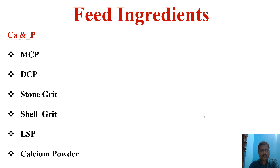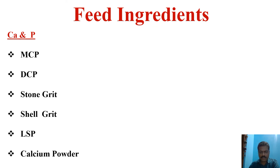Now we come to the calcium and phosphorus sources. What are the calcium phosphorus sources added in the feed formulation? There should be MCP (monocalcium phosphate) and DCP (dicalcium phosphate), which contribute both calcium and phosphorus availability to the feed. Stone grit and shell grit provide calcium. LSP (limestone powder) and calcium powder are also used. The difference in percentage of calcium and phosphorus content is very important, as these directly support bone development, skeletal development, and shell formation. We need to maintain adequate levels of calcium and phosphorus in our feed formulation.